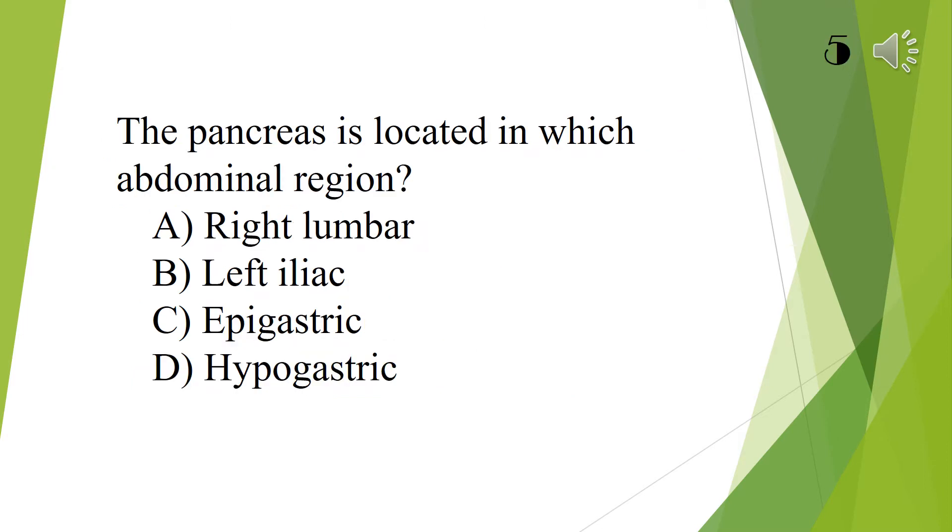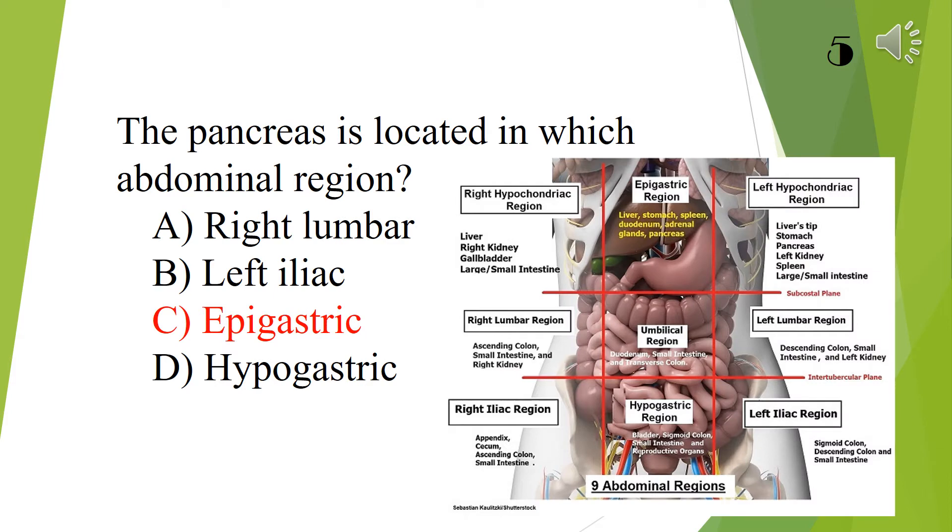The pancreas is located in which abdominal region: right lumbar, left iliac, epigastric, or hypogastric? The answer is epigastric.